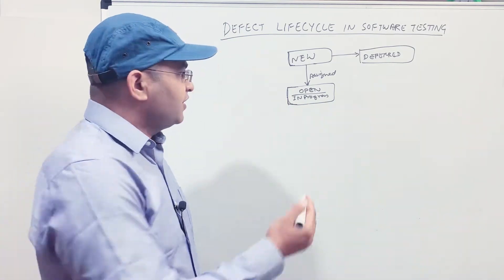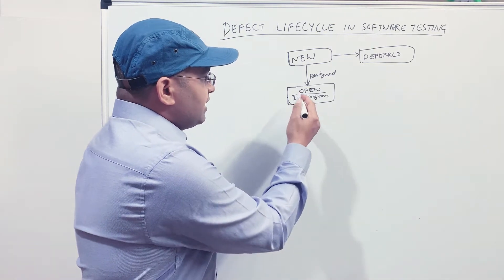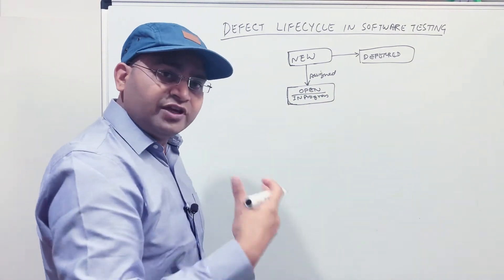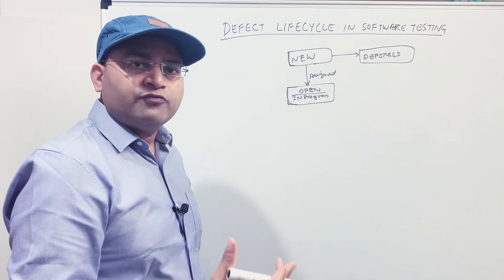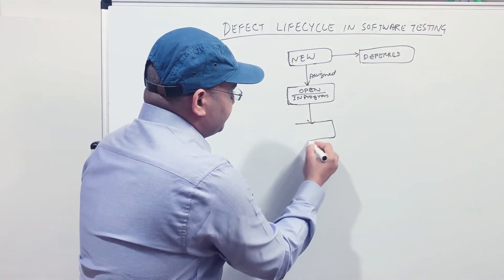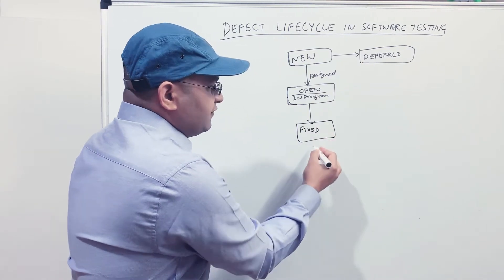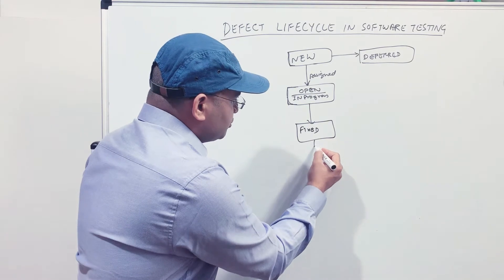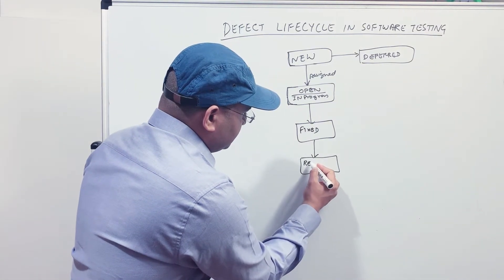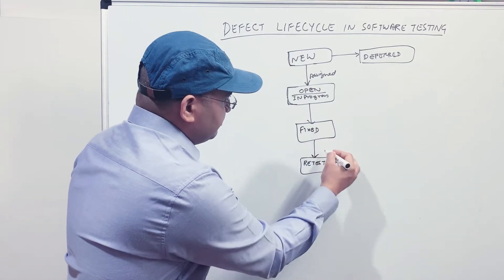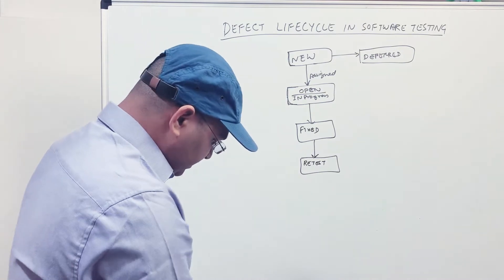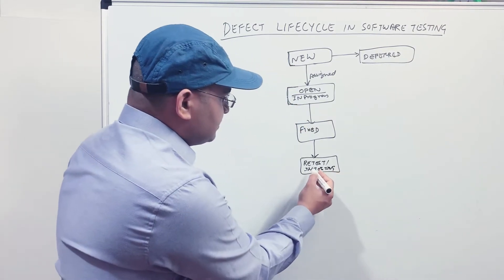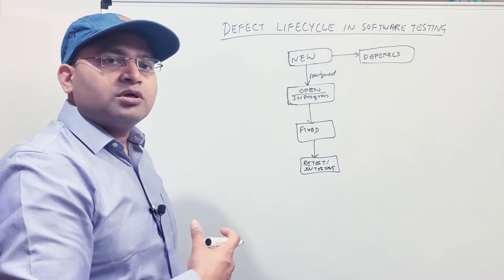Once the defect is assigned, the developer starts analyzing it. If it is a coding issue, they fix it, and once the fix has been deployed to the test environment for retesting, they mark it as Fixed. After this, the test manager typically moves it to Retest or In Testing, reassigning it to the tester for verification.